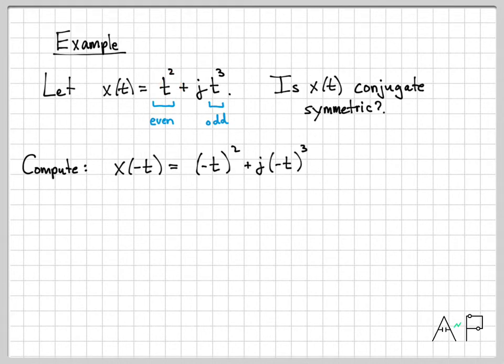A negative t squared is just t squared. And a negative t cubed ends up being minus t cubed. So I end up with t squared minus j t cubed. So that's what the time reversed signal is.